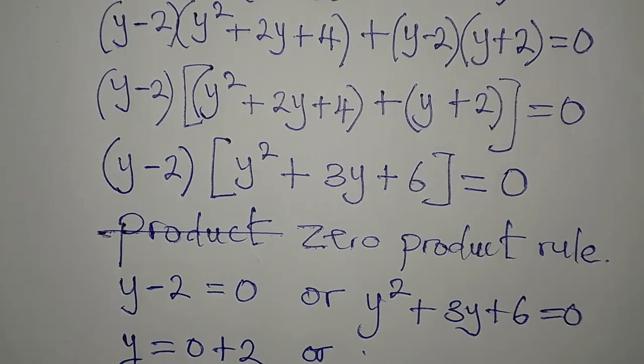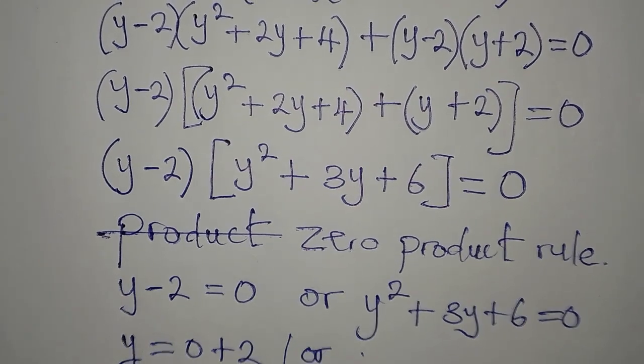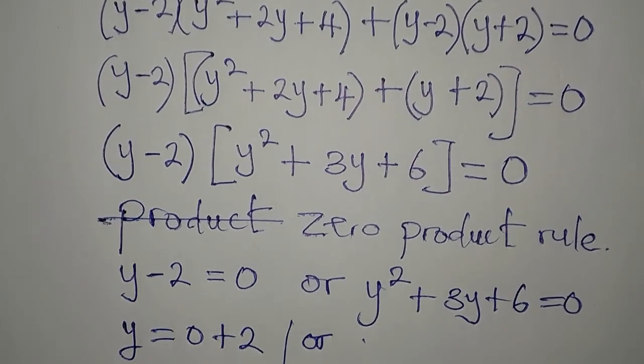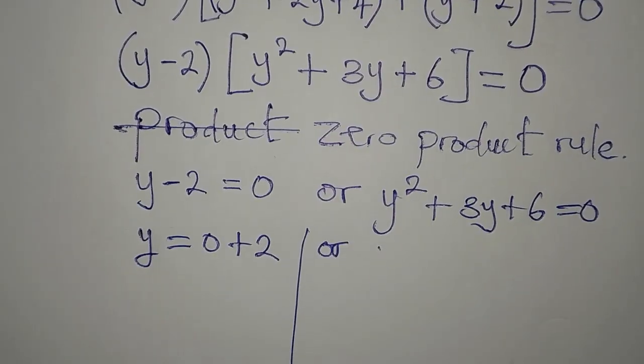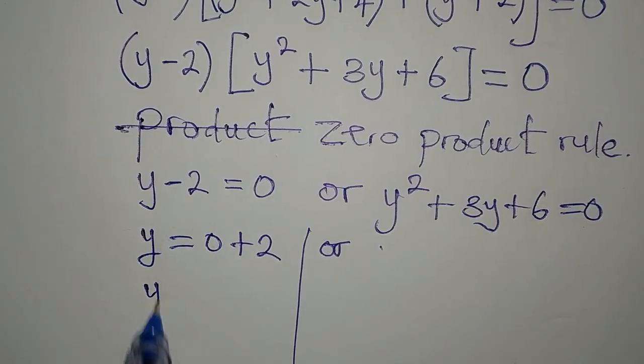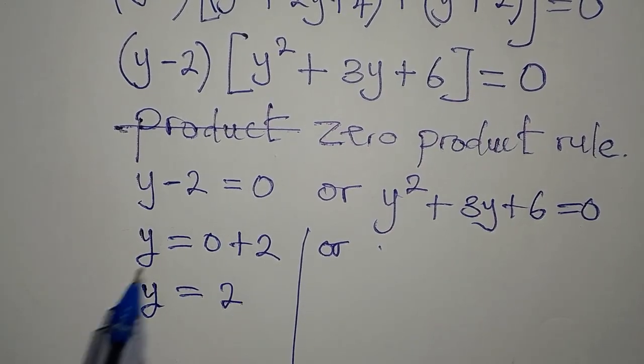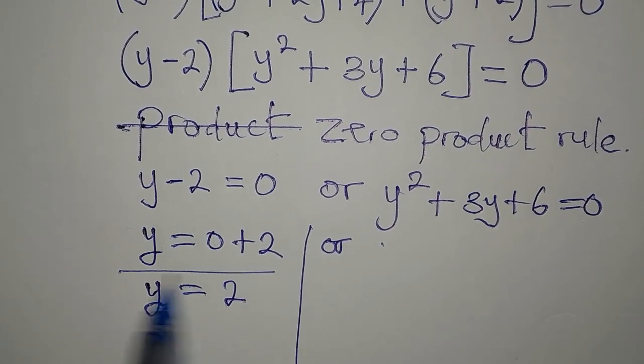Either y minus 2 equals zero, giving us y = 2 as one solution, or y² + 3y + 6 equals zero. So y equals 2 is one of the solutions.